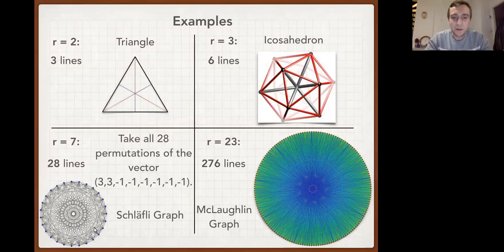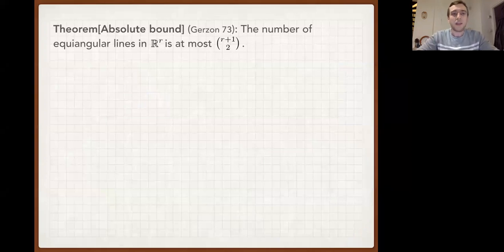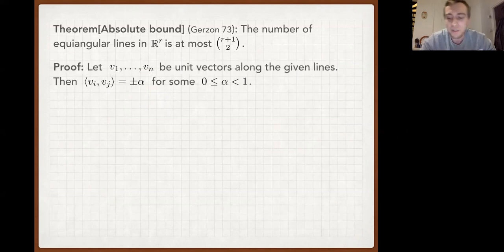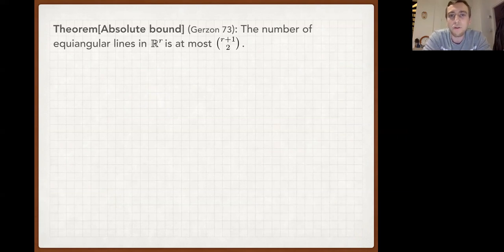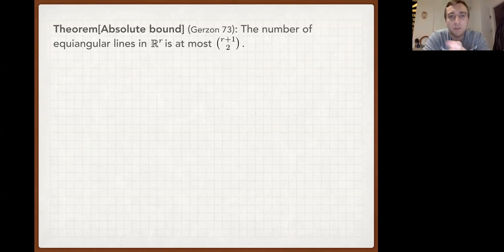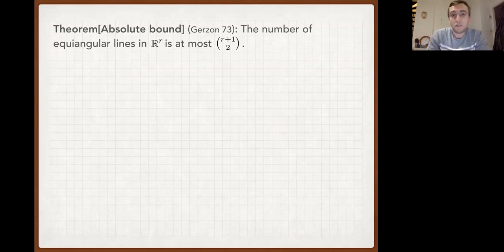Those examples are cases where we know a matching upper bound. In 1973, Gerritsen proved that in R dimensions you can have no more than (R+1)-choose-2 equiangular lines. Indeed, the numbers I gave for R = 2, 3, 7, and 23 all equal (R+1)-choose-2. Let's give a quick proof of this statement — it's probably known to many, but it will lead us further and motivate a second proof later.